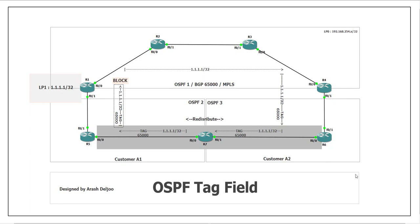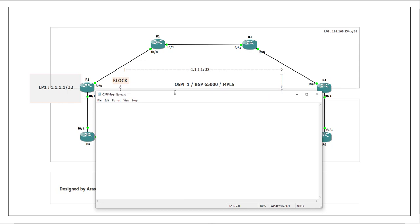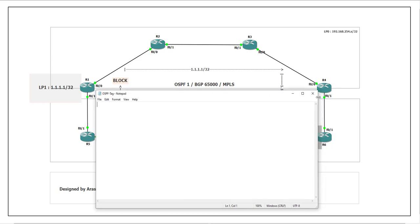This is the function of the tag field. To understand exactly what is happening, we need to configure this scenario. I'm going to configure it from scratch — you can skip ahead to the verification parts if you prefer. Let me start the configuration with the service provider, then add configuration step by step. I'll use a notepad file. The first part covers the service provider configuration using OSPF process 1.